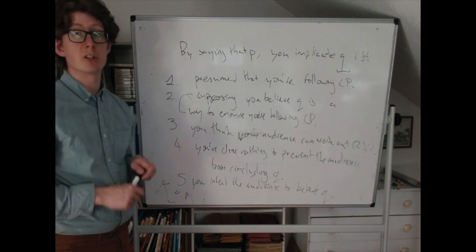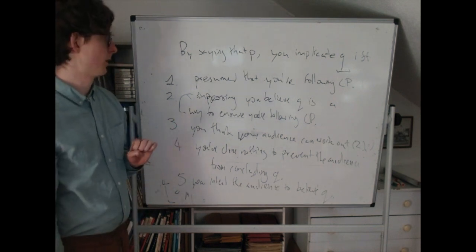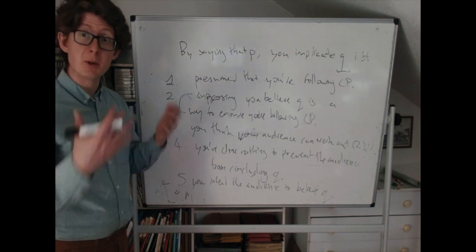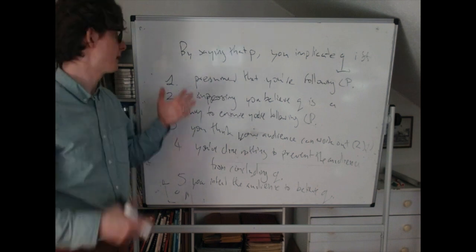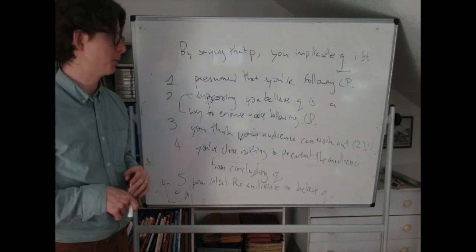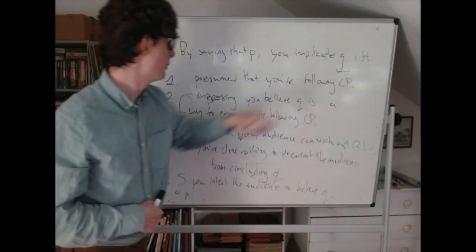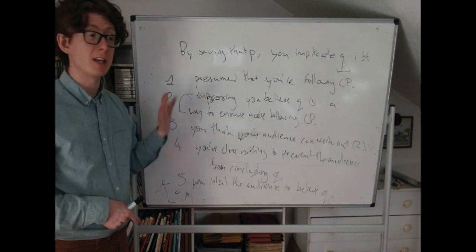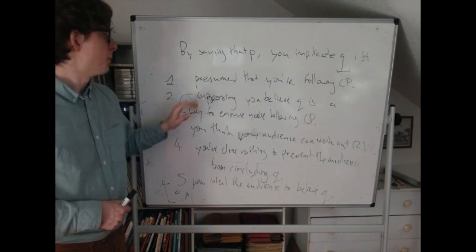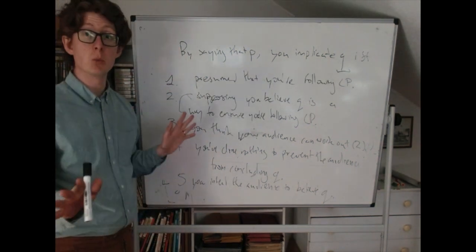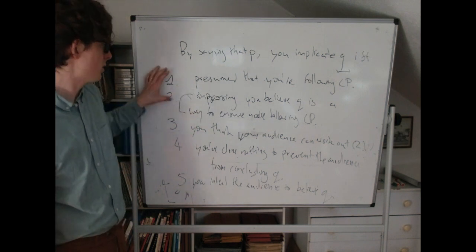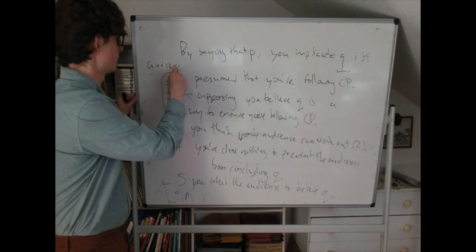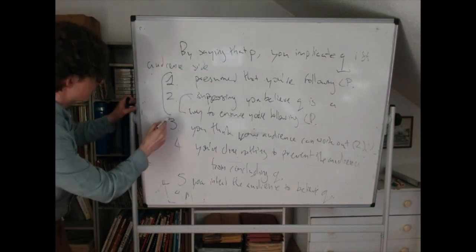It's a complicated definition, but there's a reason for all the different conditions. First, it's presumed you're following the cooperative principle — that's what gets everything off the ground, what generates the implicature in the first place. Second, supposing you believe what you're trying to implicate is a good way to ensure you're really following the cooperative principle. In these cases, you say something that looks like it violates the cooperative principle, but if we suppose you're implicating a further thing, then there's no longer a violation — we can explain away why it appears there's a violation. These two conditions together underlie the audience's reasoning; they're on the audience side.